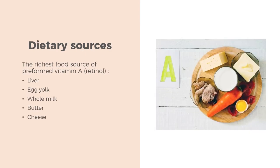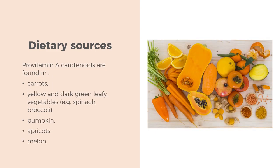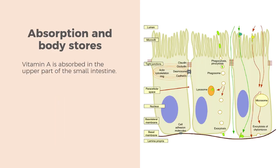The richest food source of preformed vitamin A is liver, with considerable amounts also found in egg yolks, whole milk, butter, and cheese. Provitamin A carotenoids are found in carrots, yellow and dark green leafy vegetables, pumpkins, apricots, and melon.